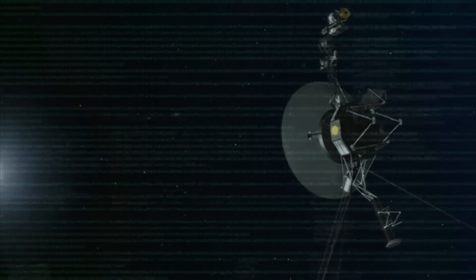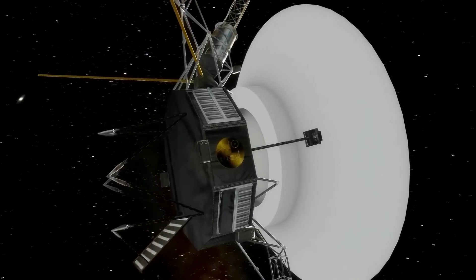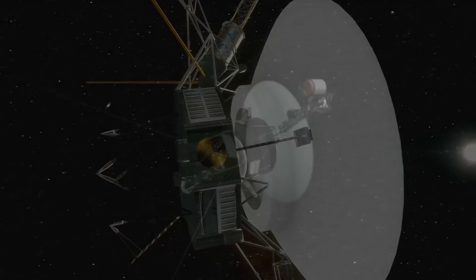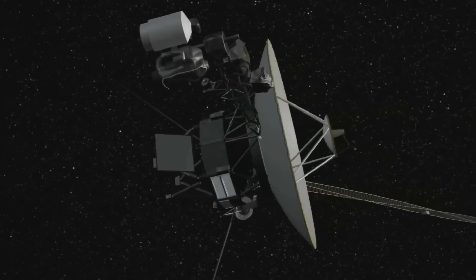In 2022, Voyager's attitude control and articulation system experienced a failure. The system is crucial to keeping the antennas pointed toward Earth. Prior to this failure, the probe's performance had been flawless.